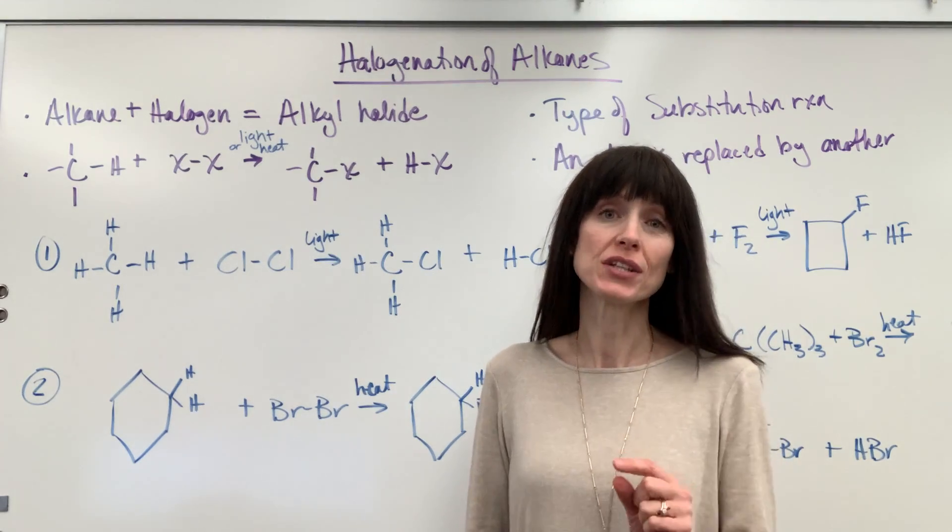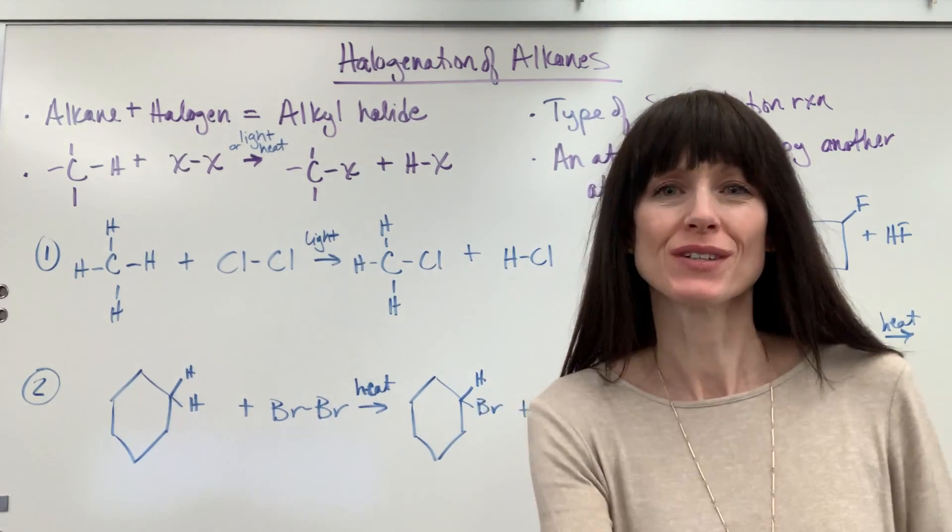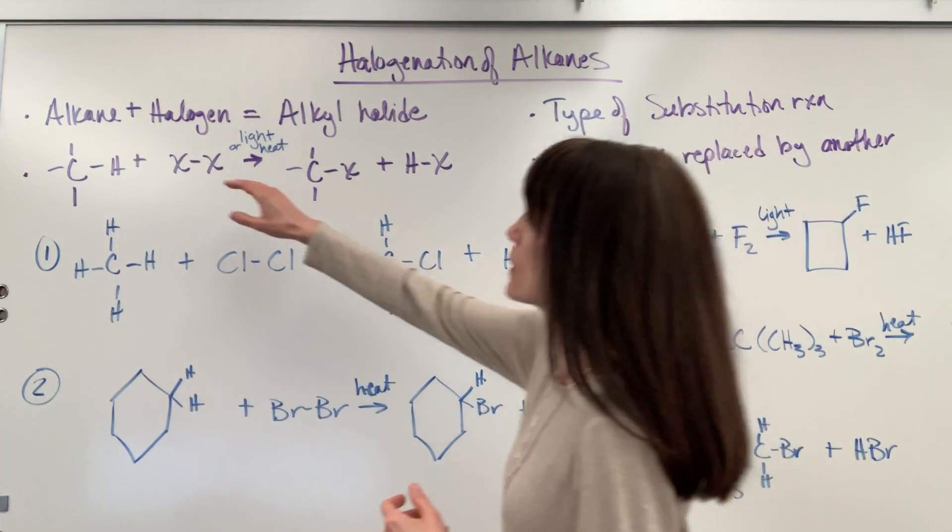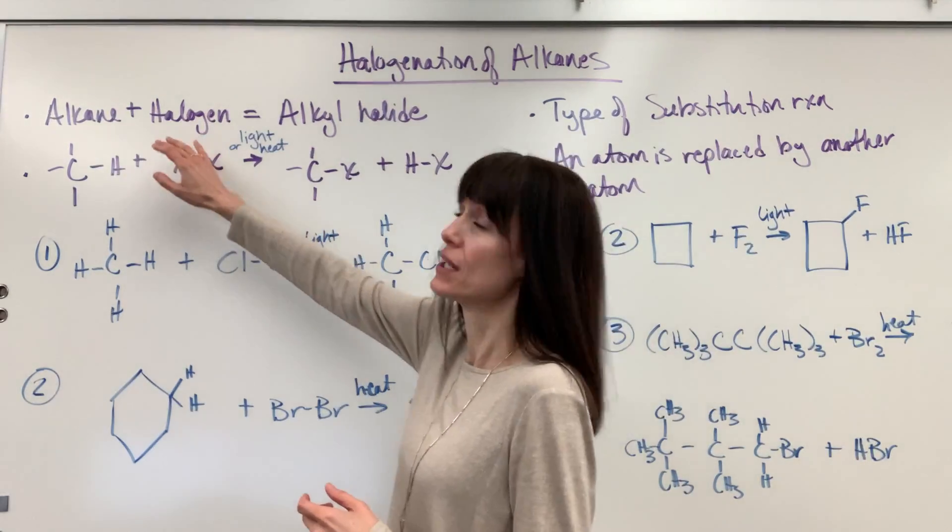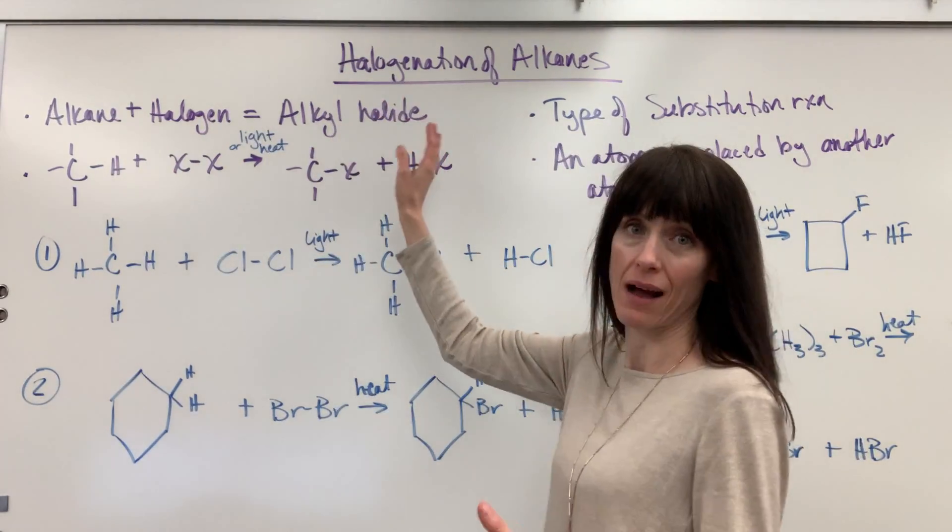Hi, we're going to talk about the halogenation of alkanes. So here's the general formula. You're going to have an alkane plus a halogen and it's going to form an alkyl halide.